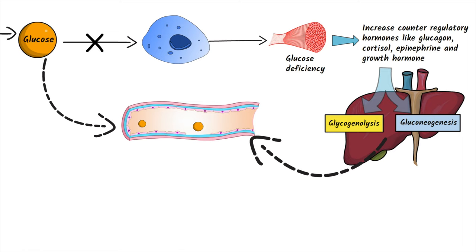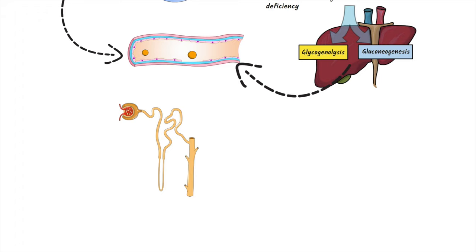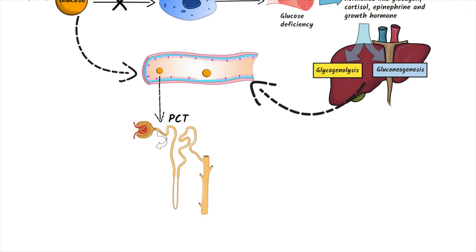So further glucose comes to the blood circulation from the liver. But the problem is our cells are unable to use that glucose due to the absence of insulin. Glucose is normally reabsorbed in the proximal convoluted tubule of the nephron, but the nephron can't handle this excess amount of glucose, so the excess glucose comes out of the kidney in urine, dragging water and electrolytes along with it in a process called osmotic diuresis.